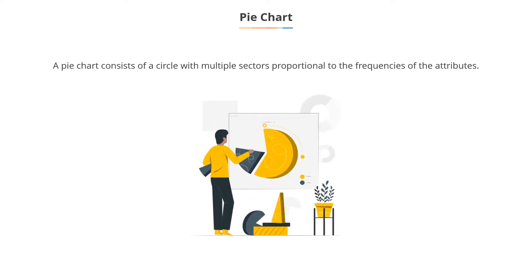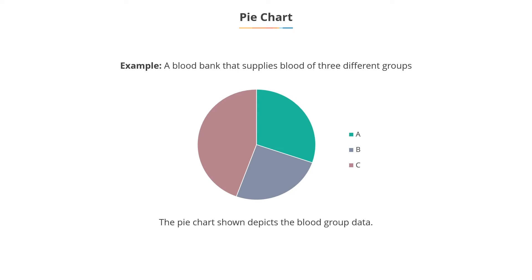Next, you have the pie chart. A pie chart consists of a circle with several sectors, one for each attribute in the data set with areas proportional to the frequencies of the attributes. The pie chart for the blood group data is shown on your screen. The third type of chart is the histogram.